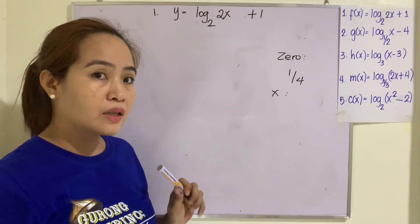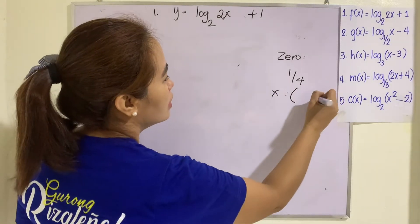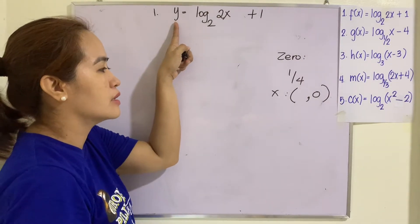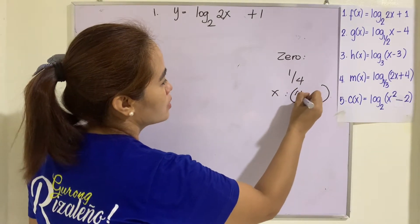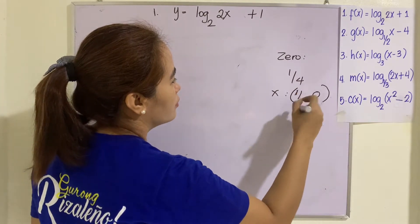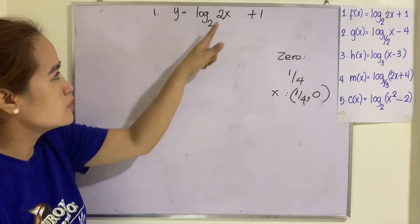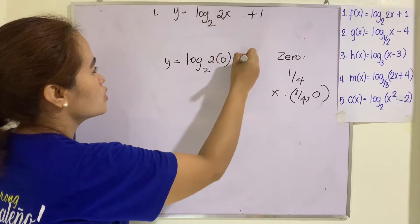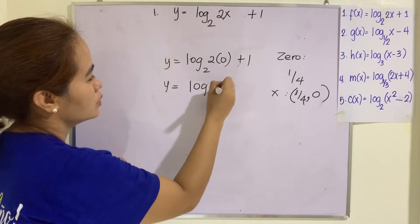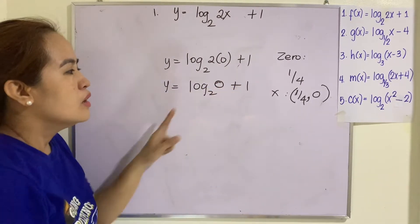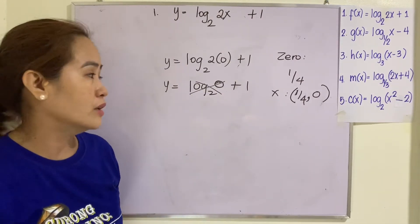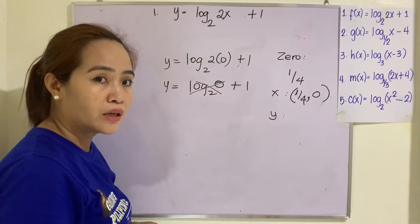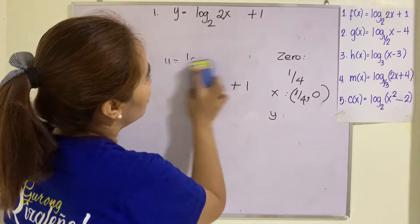For the x-intercept, remember that this is a point that lies on the x-axis. You set y to zero again — if I set this to zero and solve for x, I will still get one fourth, so that will be our x-intercept. For the y-intercept, you set x to zero: y equals log of 2 times 0 to the base 2 plus 1. This gives log of 0, which is undefined, so we do not have a y-intercept.